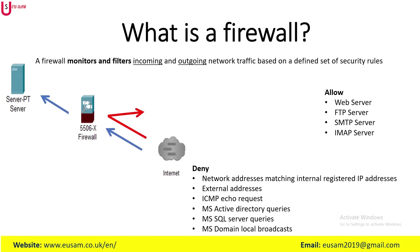Another possible denial is inbound traffic to the server from external addresses — that is, the server is not accessible from the internet or any network outside its immediate allowed network segment. Another possible denial is inbound Internet Control Message Protocol requests, meaning the firewall is configured to block incoming ping requests. Another denial is the Microsoft Active Directory query — the firewall is configured to block any incoming traffic attempting to communicate with the Microsoft Active Directory within your organization.